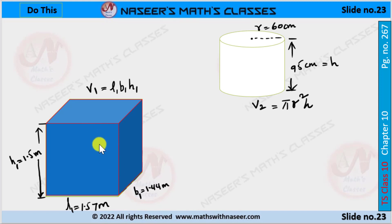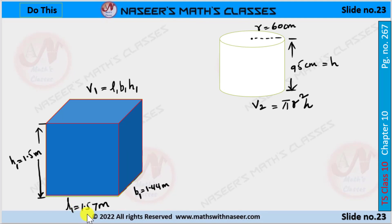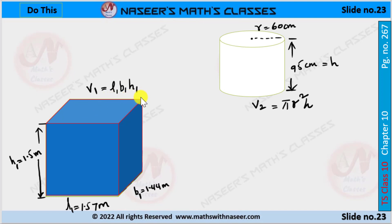Here, this is the sump which is in the form of a cuboid. Length L1 is 1.57 meters, breadth B1 is 1.44 meters, and height H1 is 1.5 meters. Volume V1 is equal to L1 × B1 × H1.